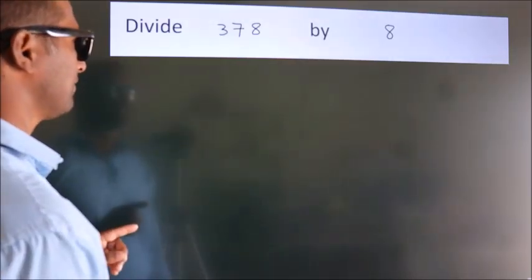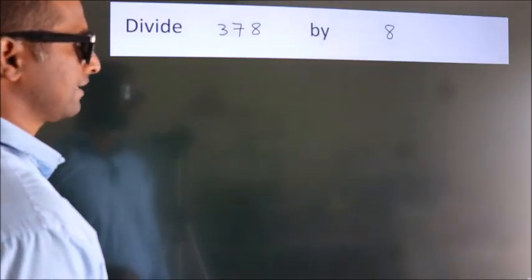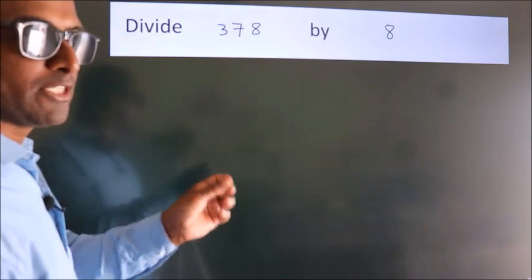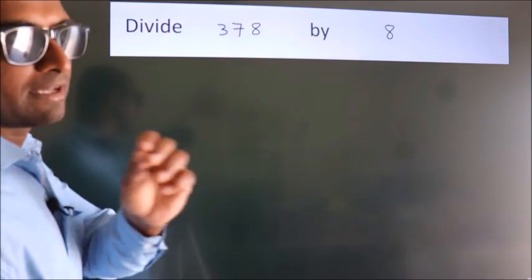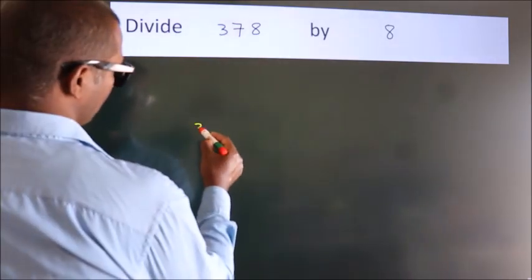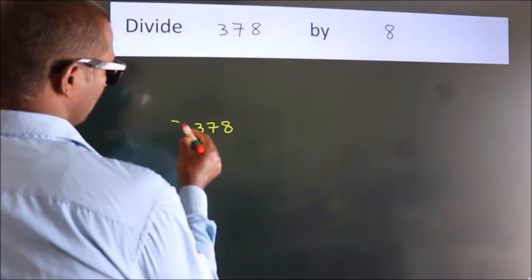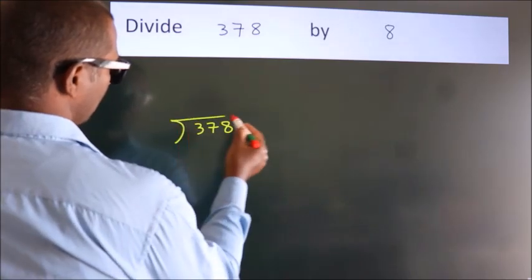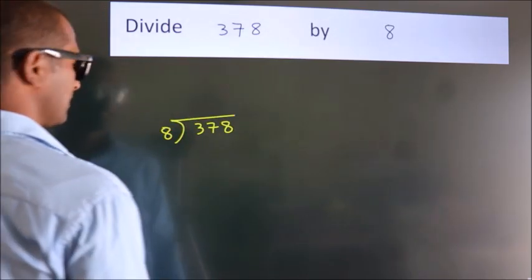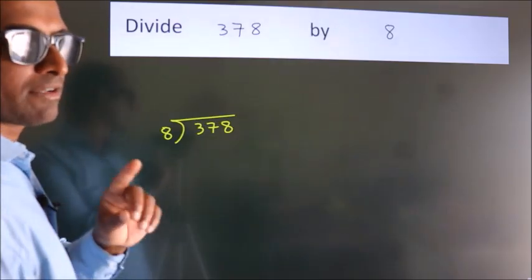Divide 378 by 8. To do this division, we should frame it in this way: 378 here, 8 here. This is your step 1.